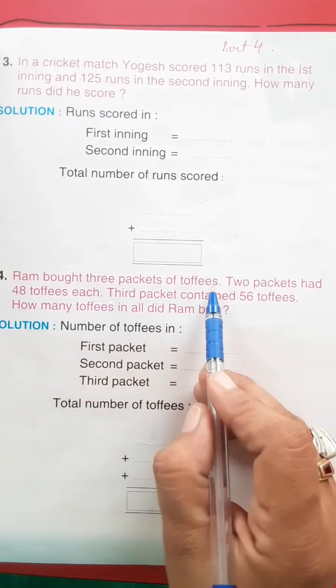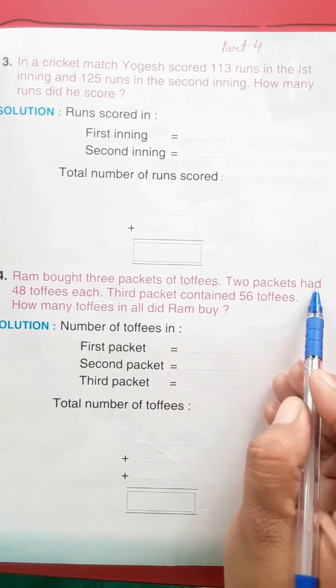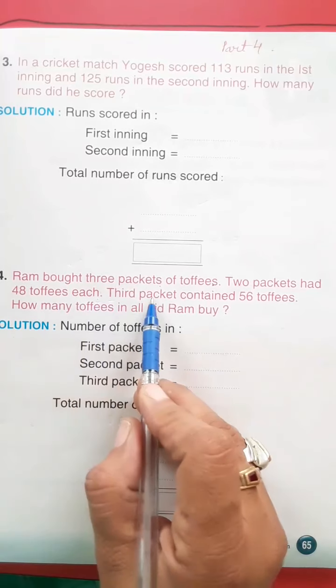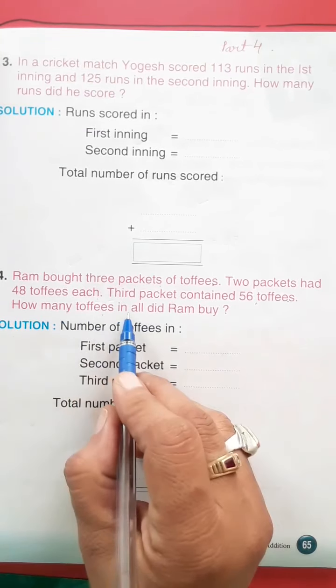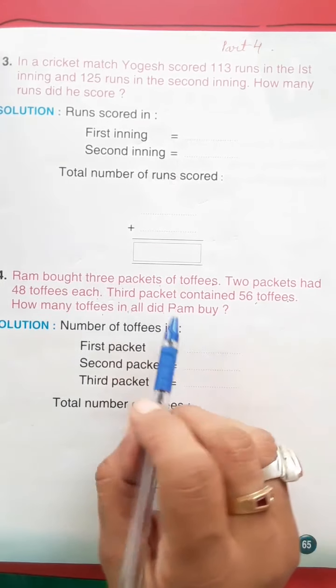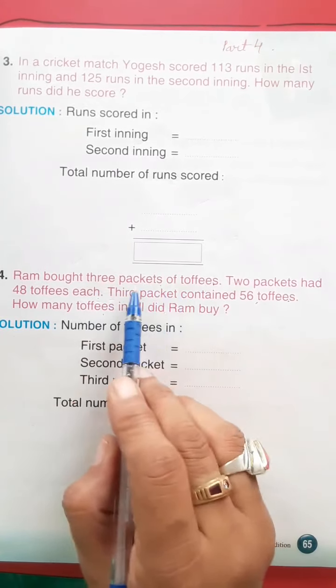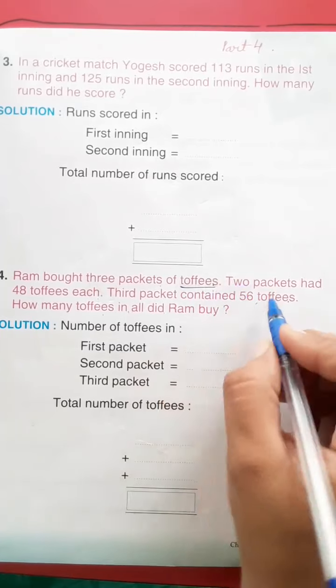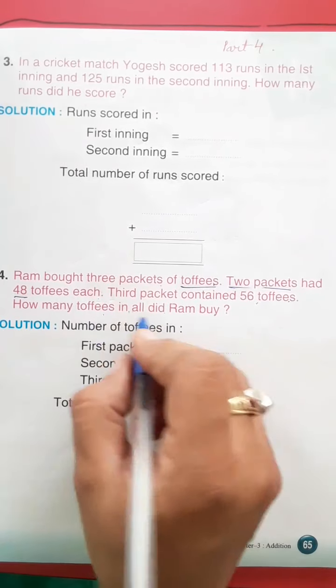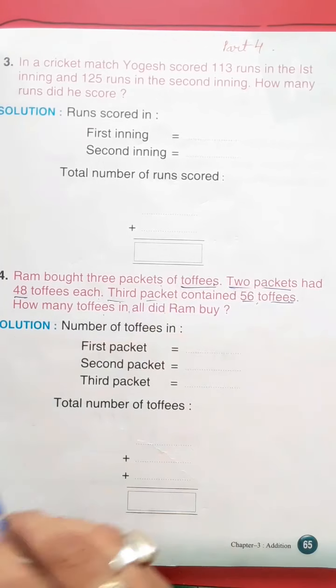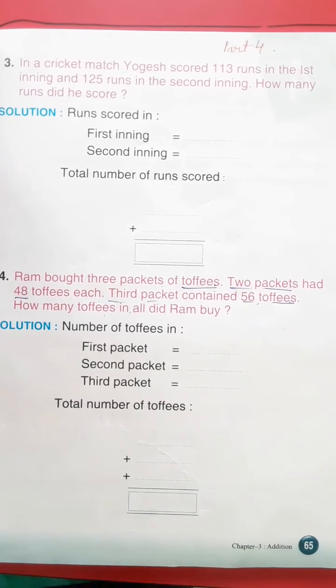Sum number 4: Ram got three packets of toffees. Two packets had 48 toffees each. Third packet contained 56 toffees. How many toffees did Ram buy? Ram ne 3 packets kari de toffees ke. 2 packets me 48 toffees each hai, aur third packet me 56 toffees.